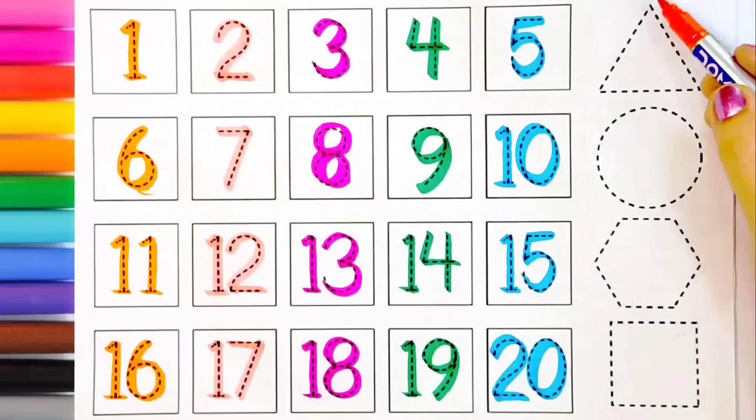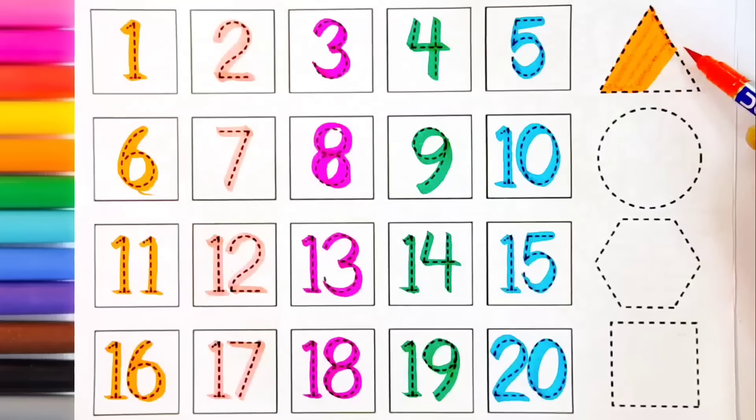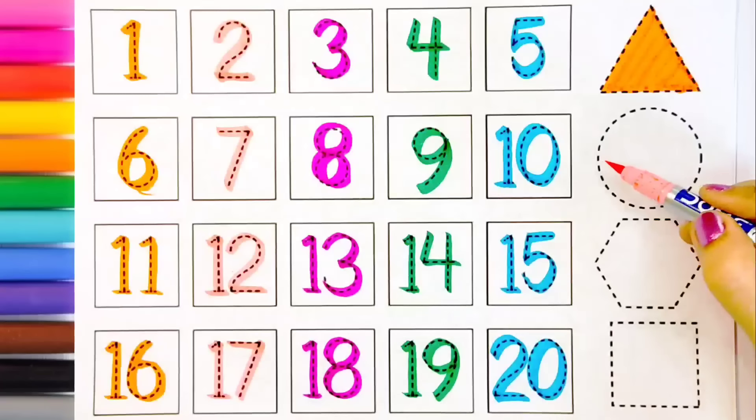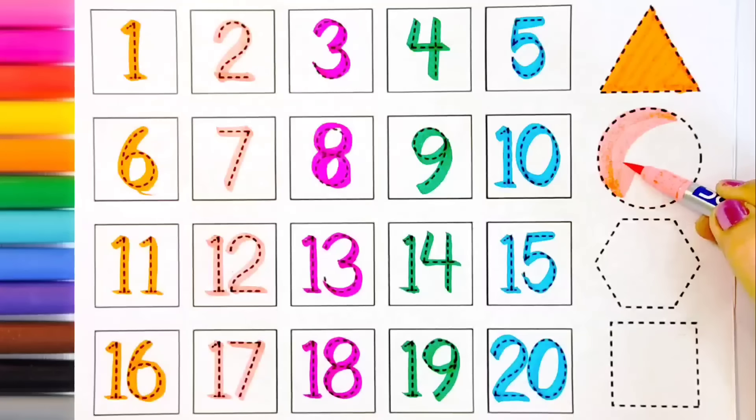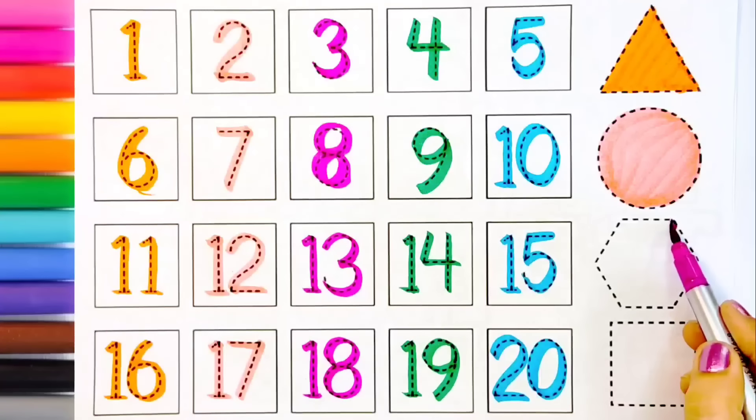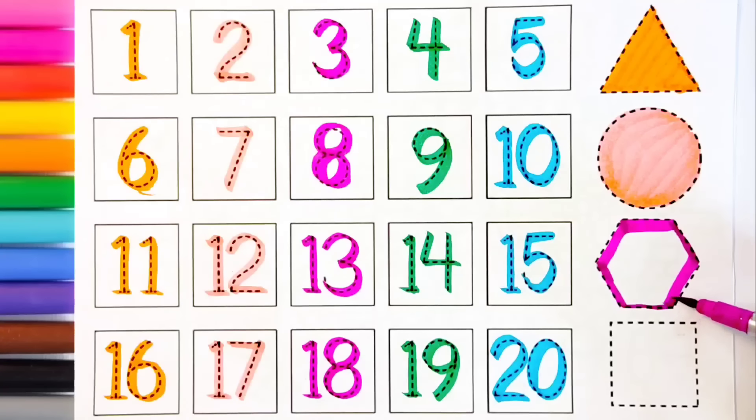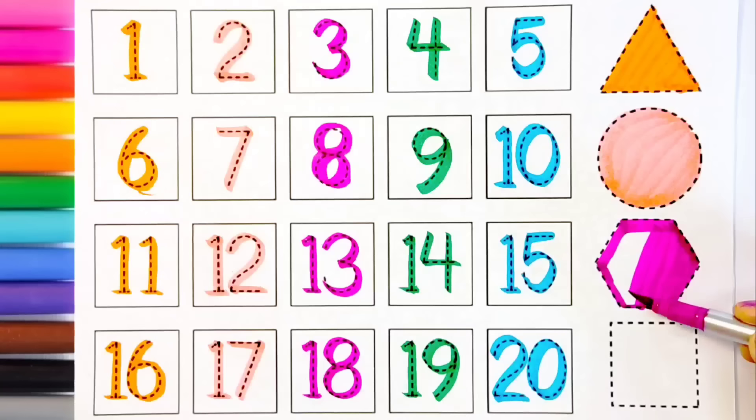Orange color, triangle shape. Triangle. Peach pink color, circle shape. Circle. Pink color, hexagon shape. Hexagon. Circle shape, hexagon.